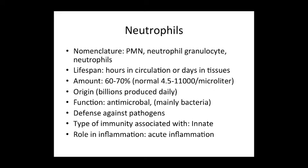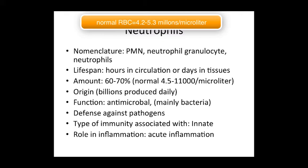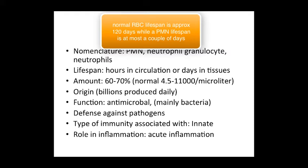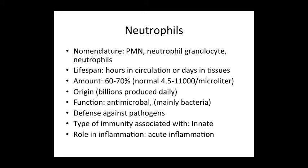Their lifespan is usually quite short in circulation, but is prolonged when they are actually working in your tissues. Remember, all blood cells originate from the bone marrow. White blood cells are actually the most commonly seen cells in bone marrow compared to red blood cells, because white blood cells are produced constantly due to their short lifespan — unlike red blood cells, which have a lifespan of approximately 120 days.